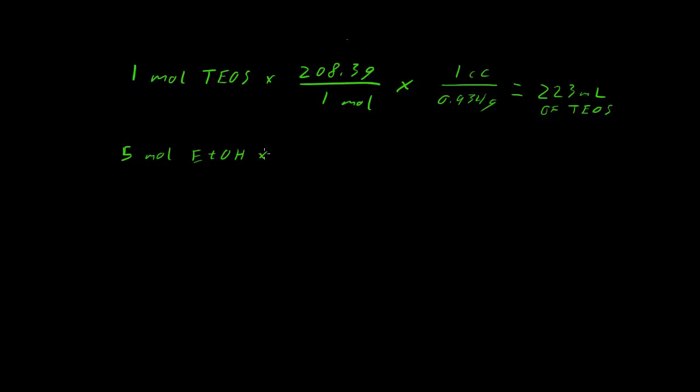That's just how much volume one mole of TEOS gives you. We can do the same thing for our ethanol, so five moles times the molecular weight of ethanol divided by the density of ethanol gives us the total number of milliliters of ethanol in the solution. Same thing with the water, multiply it by its molecular weight and divide it by its density, and we'll get the number of milliliters of our water.